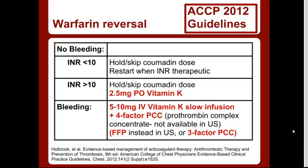If they are bleeding, the difference is you want IV vitamin K and it has to be a slow infusion. The recommended dose is 5 to 10 milligrams. The 2012 guidelines now recommend 4-factor prothrombin complex concentrate; however, it doesn't seem to be available in the U.S. So we need to stick with FFP, which is available in the U.S. and was the prior recommendation, or the 3-factor PCC.